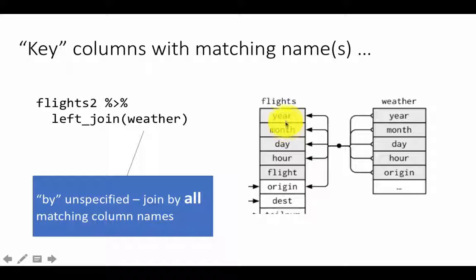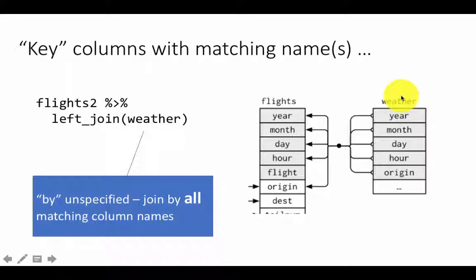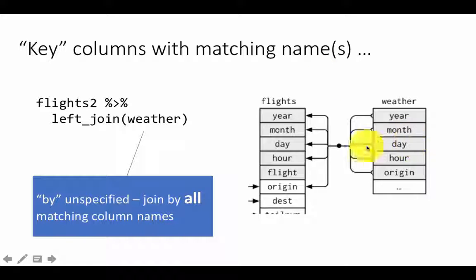Instead of the key match being just one column, the matching would now mean that all of these values are equal: year from flights equals year from weather, month from flights equals month from weather, day equals day, hour equals hour, and origin equals origin. Only when all the columns match is it considered to be a match, and then the results appear.